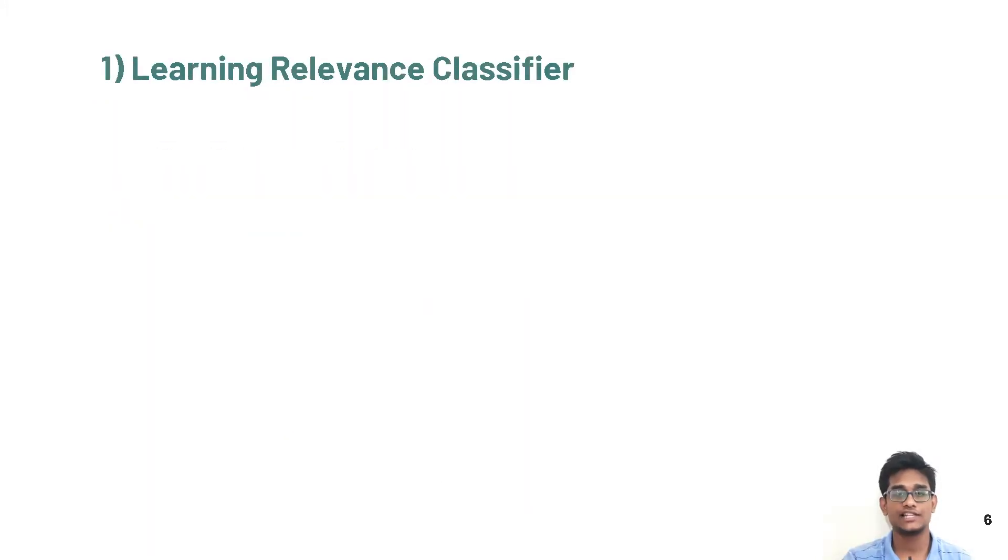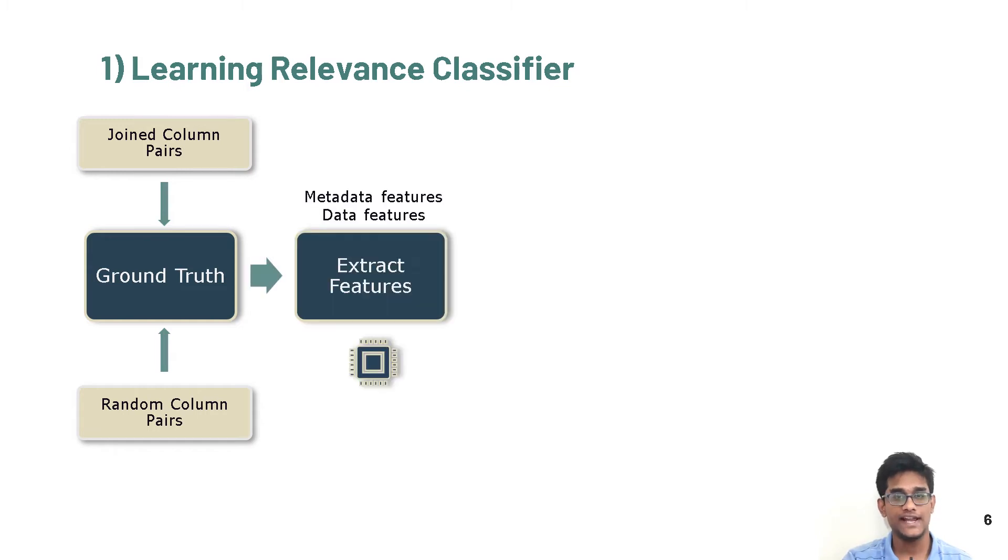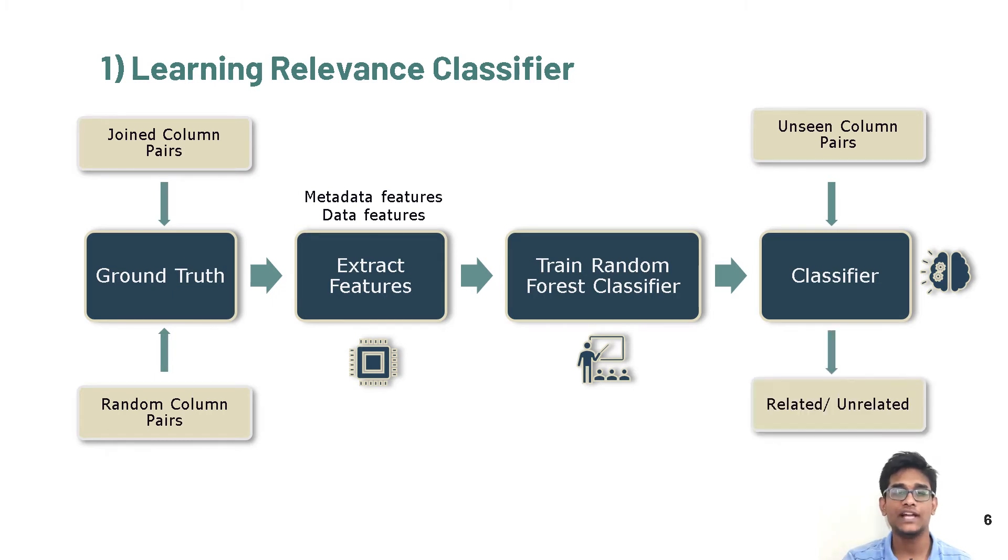For building a relevance classifier, we start by generating our ground truth, where positive samples are the column pairs joined in the past, and negative samples are random column pairs from the data set. Although this can add noise to the data set as randomly selected column pairs may be related, it is statistically unlikely if we take a large number of columns. Then, we extract few features based on metadata and data collected from these columns in the ground truth, and train a random forest classifier with 100 trees. This classifier takes column pairs not seen before in the ground truth and gives the probability of them being related.